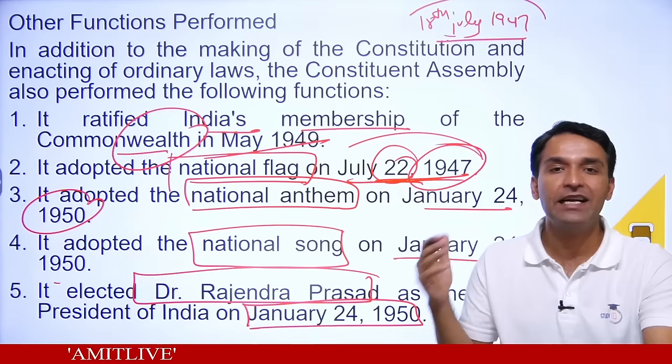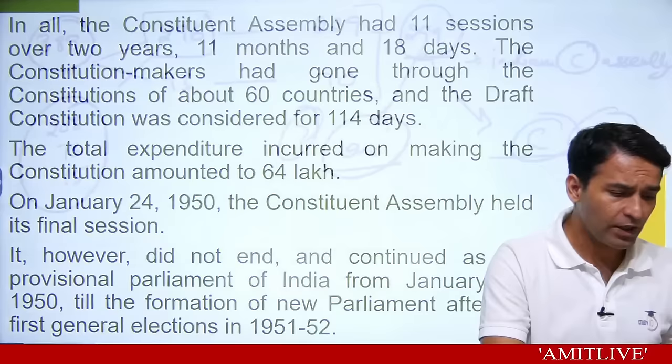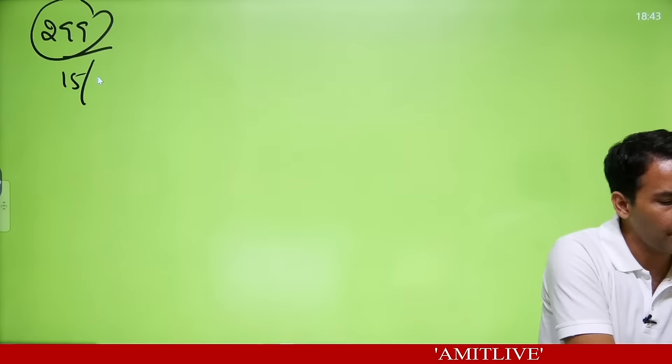These three things were done on the same day — 24th January 1950. These were the five functions the Constituent Assembly performed. After 15th August 1947, these 299 people started working. They held 11 sessions — a total of 2 years, 11 months, and 18 days. If they had waited 12 more days, it would have been exactly 3 years.